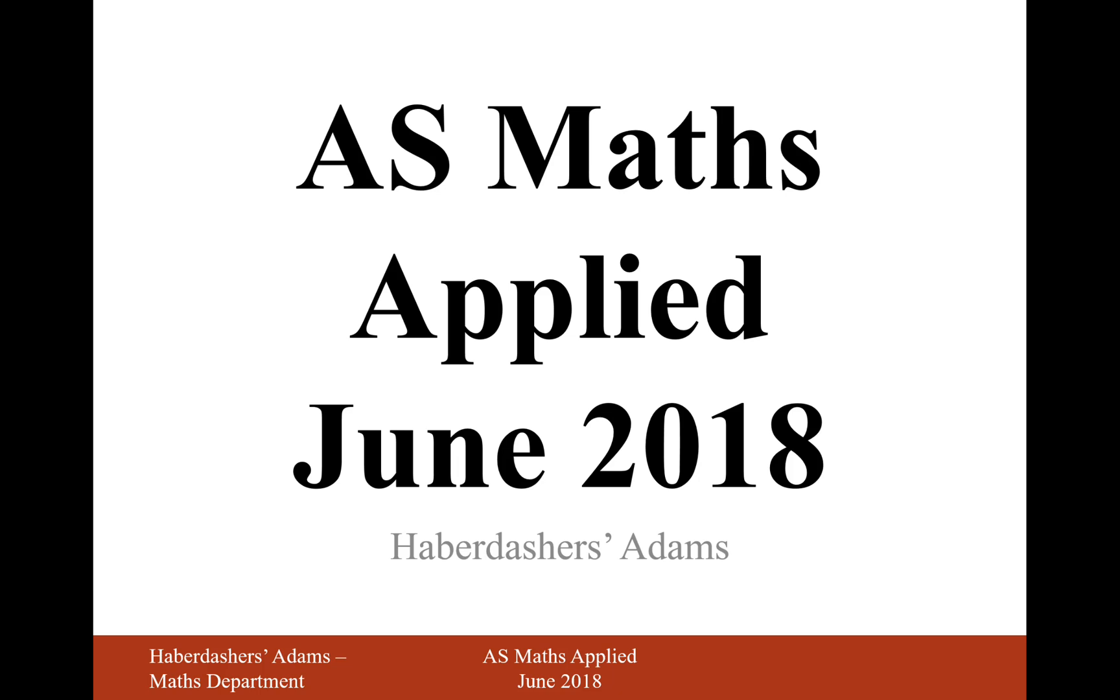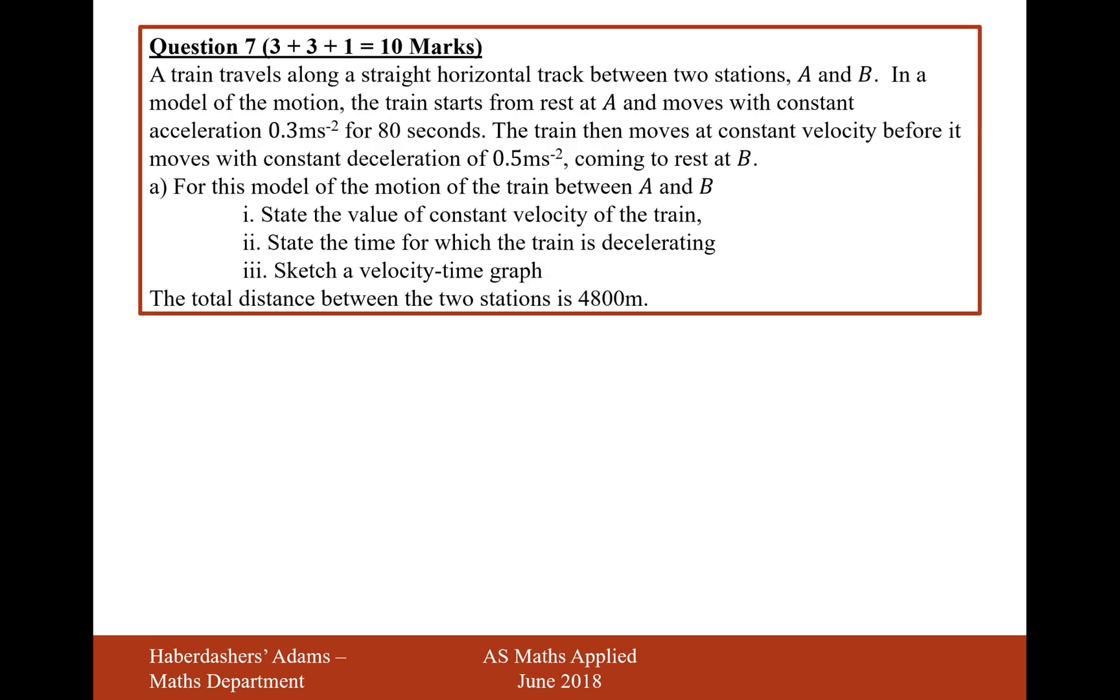Hello there, welcome to the June 2018 applied paper. Here we're looking at question 7. A train travels along a straight horizontal track between two stations A and B. In a model of the motion, the train starts from rest at A and moves with constant acceleration 0.3 for 80 seconds.